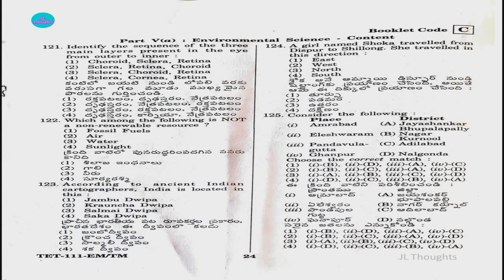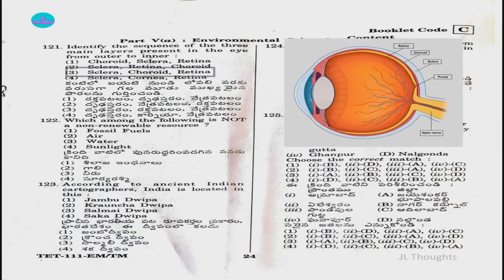Question number 121: Identify the sequence of the three main layers present in the eye from outer to inner. They are asked from outer to inner. The image is attached on the right side. The three main layers are: first, Sclera; then Choroid; then Retina — from outer to inner. So the answer is option three: Sclera, Choroid, and Retina.